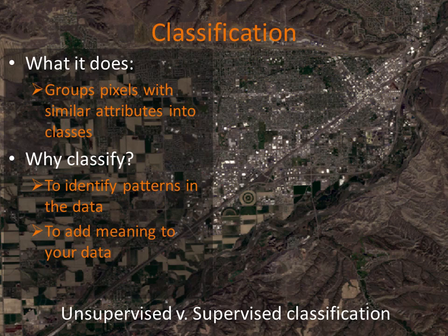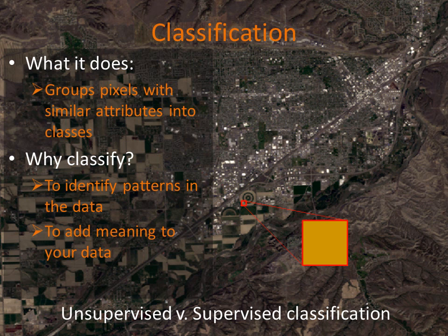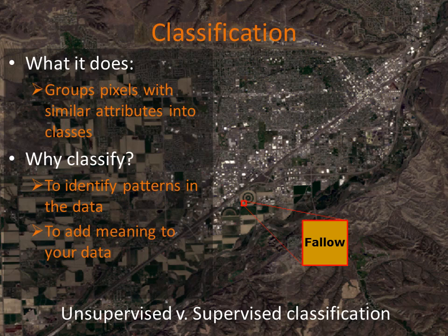When you classify remotely sensed data, you convert the digital number associated with each pixel into membership in one of several classes that have more meaning than the digital number alone. Keep in mind that each pixel represents the amount of electromagnetic energy reflected by that 30 by 30 meter square of the Earth's surface at a particular wavelength. Consider the pivot irrigation in the central part of the image. Imagine a red box representing a 30 by 30 meter pixel, and how the pixel's spectral signature might look. Using your image interpretation skills, you can likely conclude that this particular surface is not currently under cultivation — we could classify it as fallow.